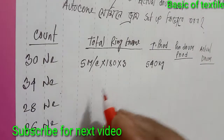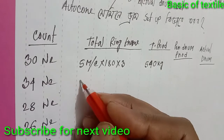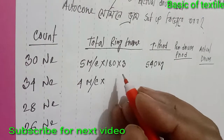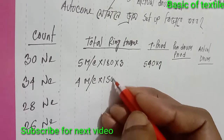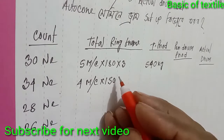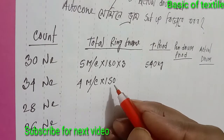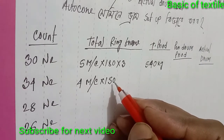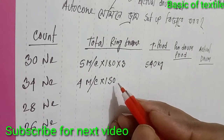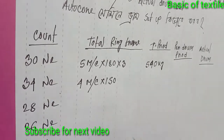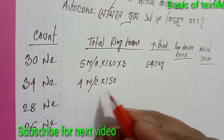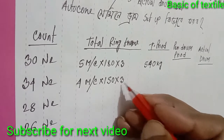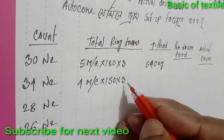For 34 count, suppose 4 machines — 1 machine per 8 hours per shift. Per shift, 1 machine for 34 count will be 150 kg. Into 3 shifts — 24 hours production will be 450 kg.